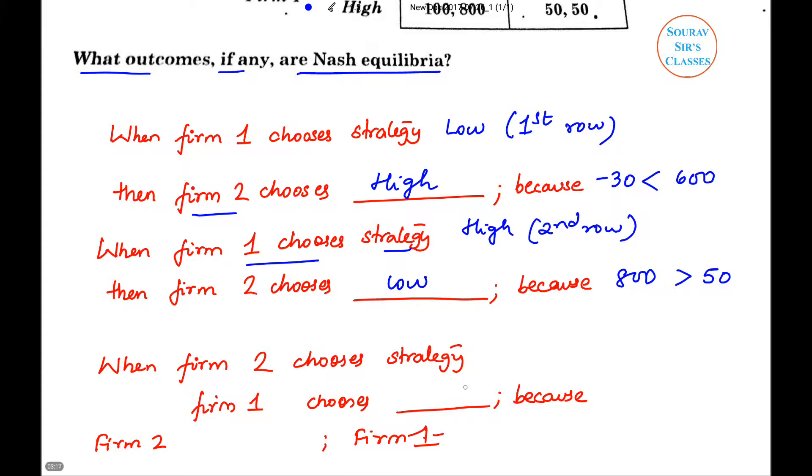When Firm 2 chooses strategy low, that means we are speaking about the first column. Firm 1 has two options: low or high. If he chooses low, he will get a payoff of minus 20. If he chooses high, he gets a payoff of 100. Because 100 is greater than minus 20, he will end up choosing high.